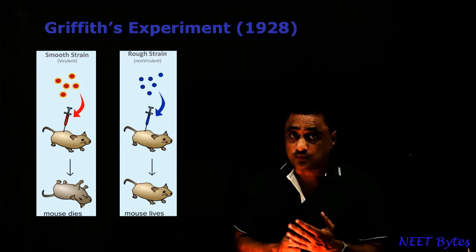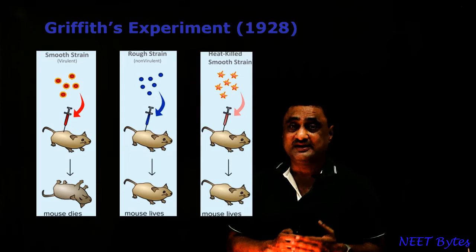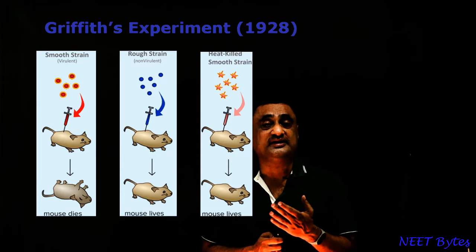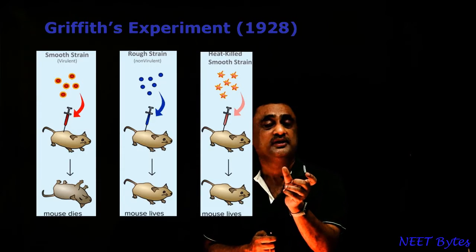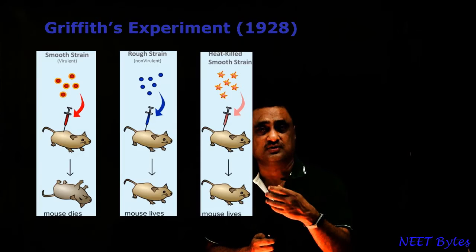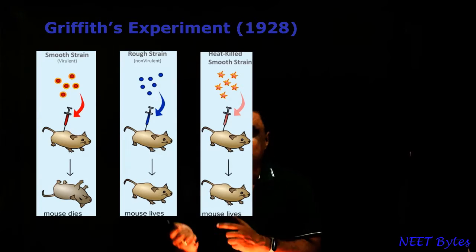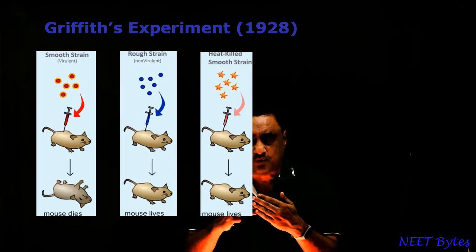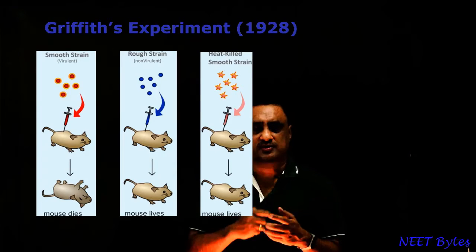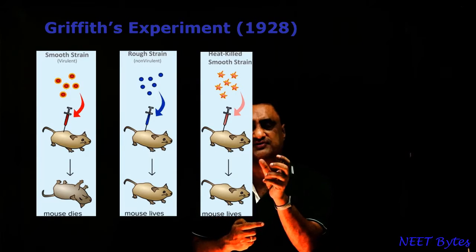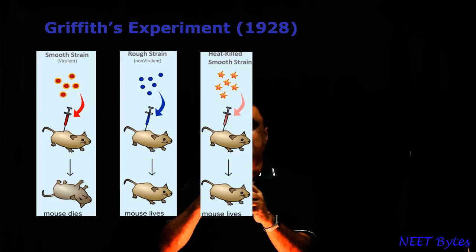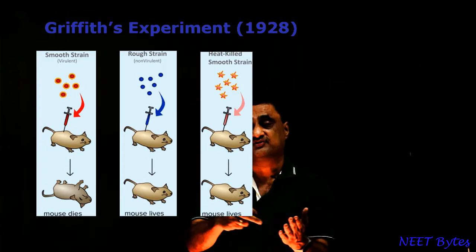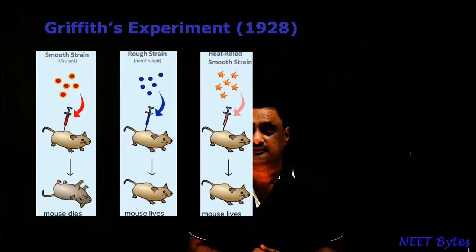In the third step, he injected the heat-killed variety of the S-form. He took the S-forms, warmed them up, and then injected that strain into the mice. Once you warm them up, whatever protein or polysaccharide layer is present outside the bacteria is going to be denatured. That is why when it was injected, the mouse survived.